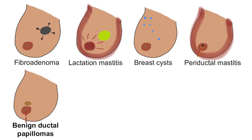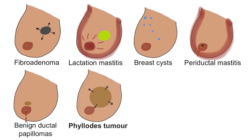Benign ductal papillomas occur in women aged 35 to 55. These are often small lumps that may be associated with bleeding or blood-stained discharge. Phylloides tumours can grow large and are discrete and mobile, typically in women in their 40s. These can occasionally be malignant, carry a high risk of local recurrence, and treatment is wide excision.